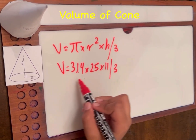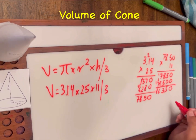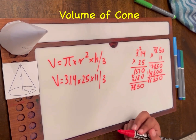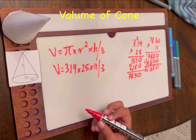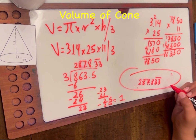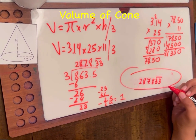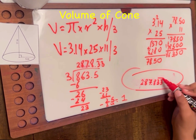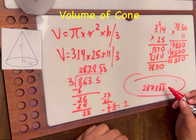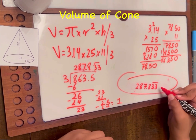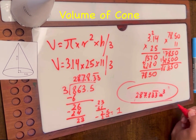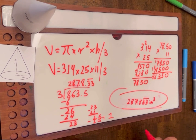First let's find the product of 3.14 times 25 times 11, then we move on to dividing by 3. The answer is 287.8̄3̄ — we add a bar above the 3 to symbolize that 3 keeps repeating forever. The units are inches cubed. This is how you calculate the volume.